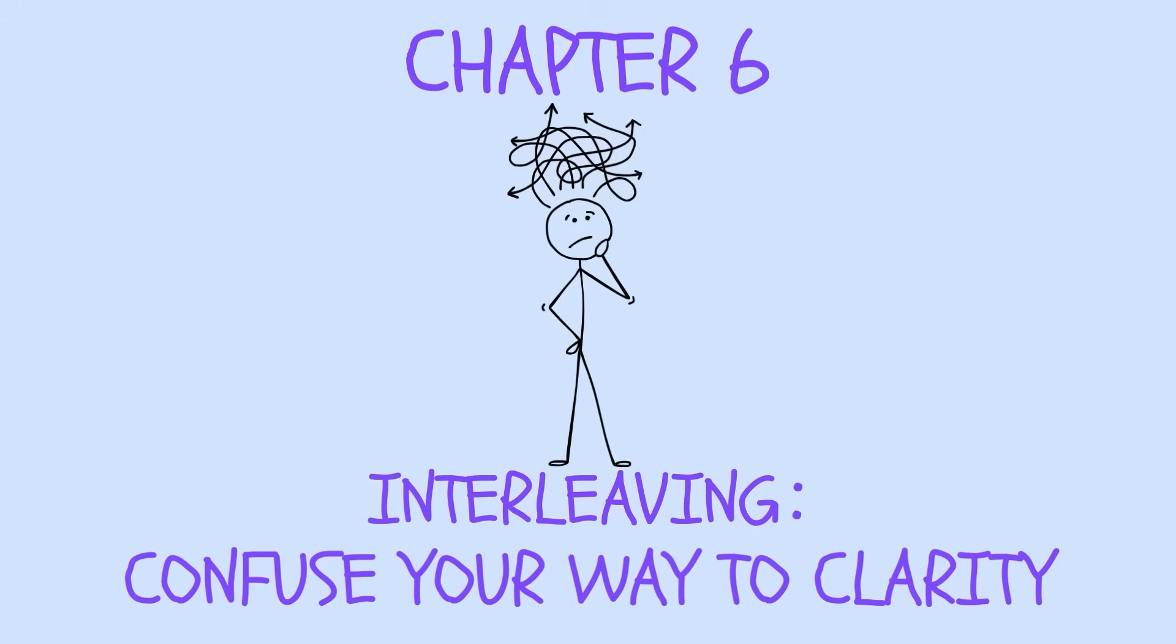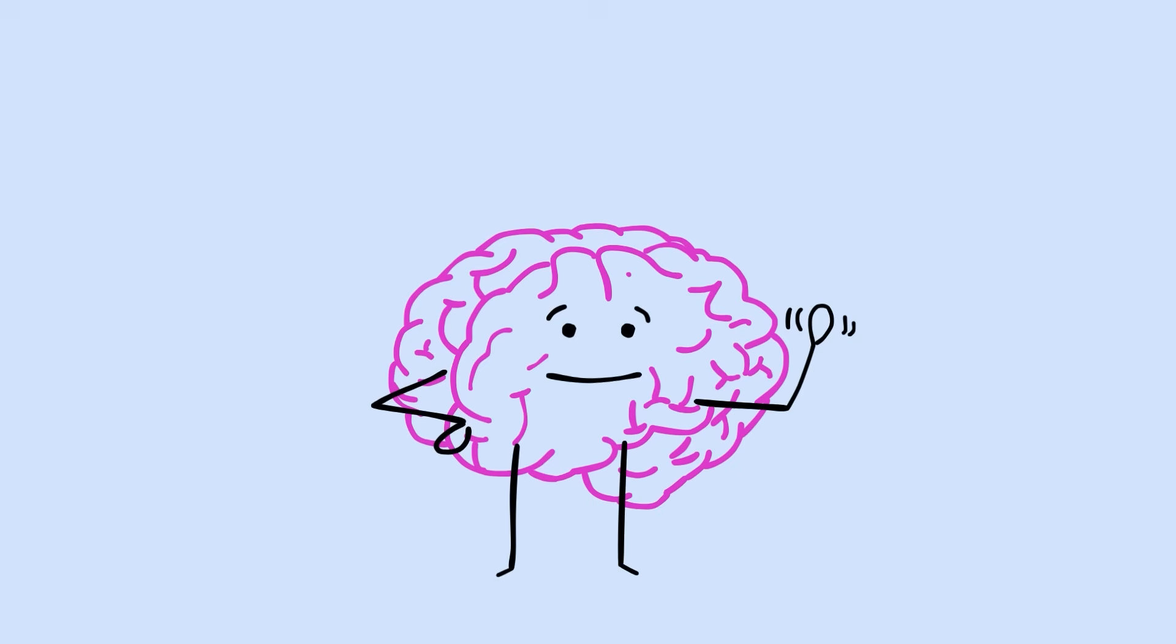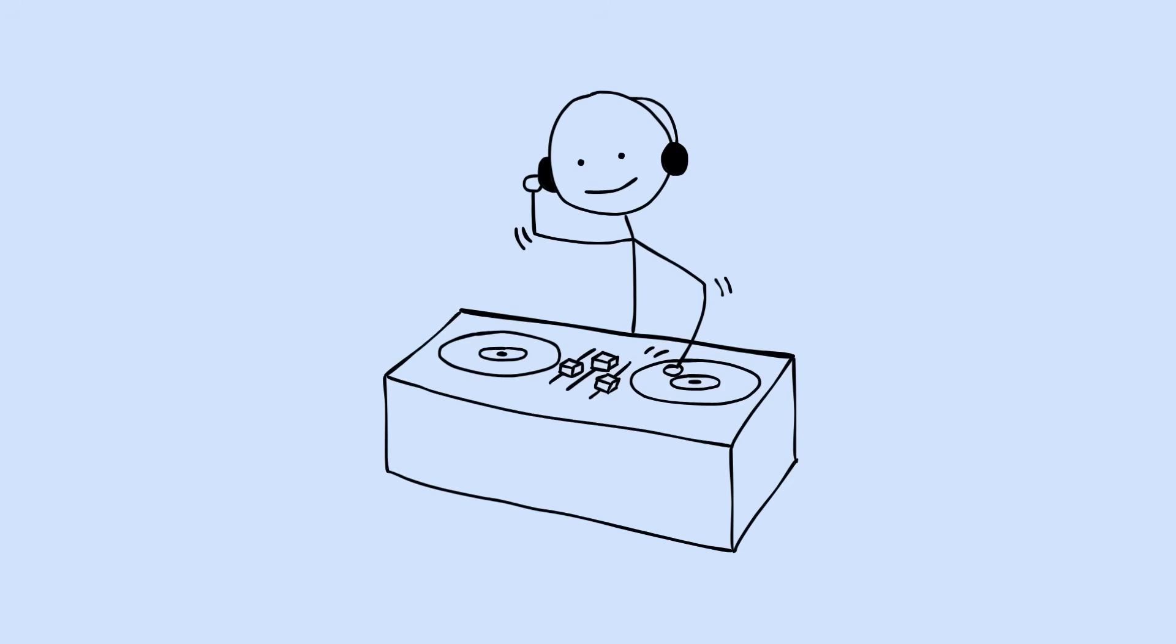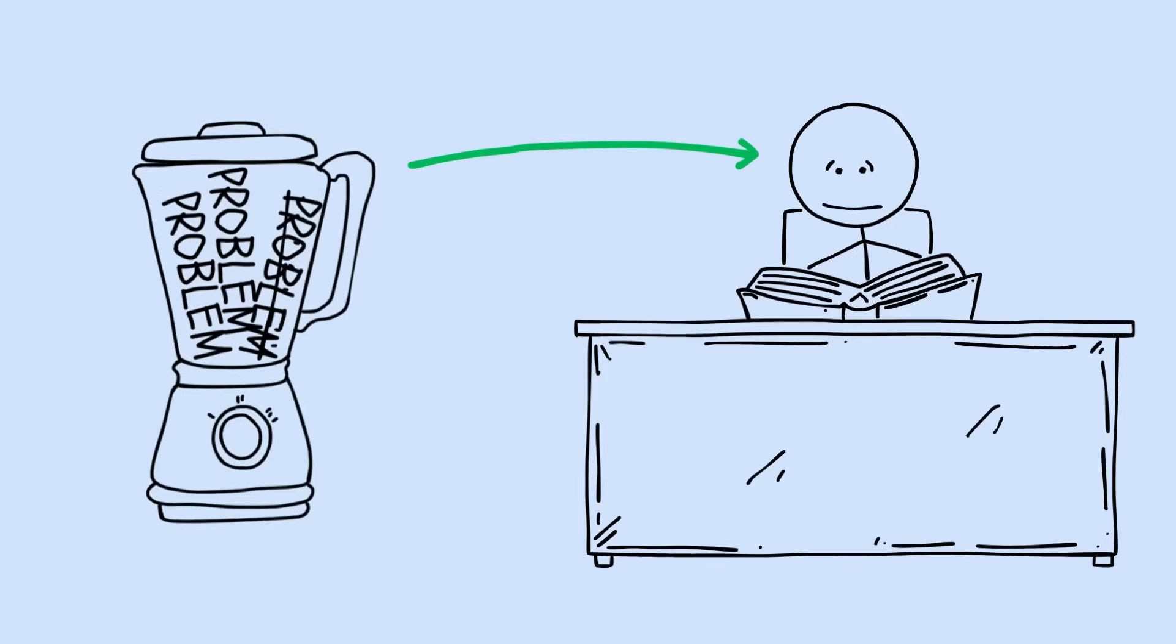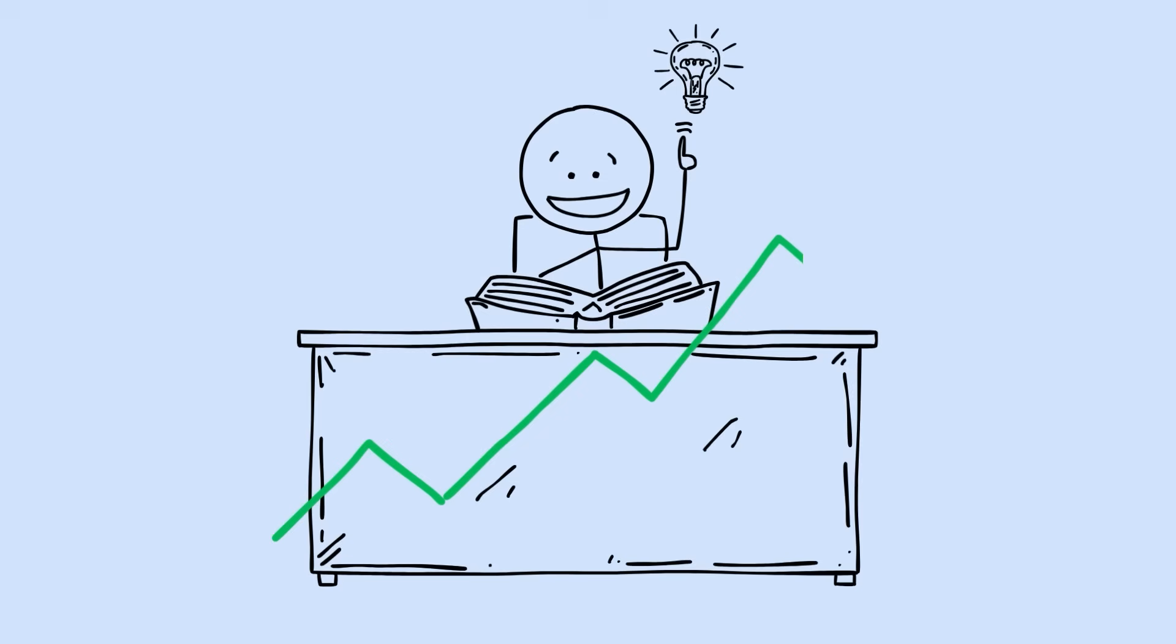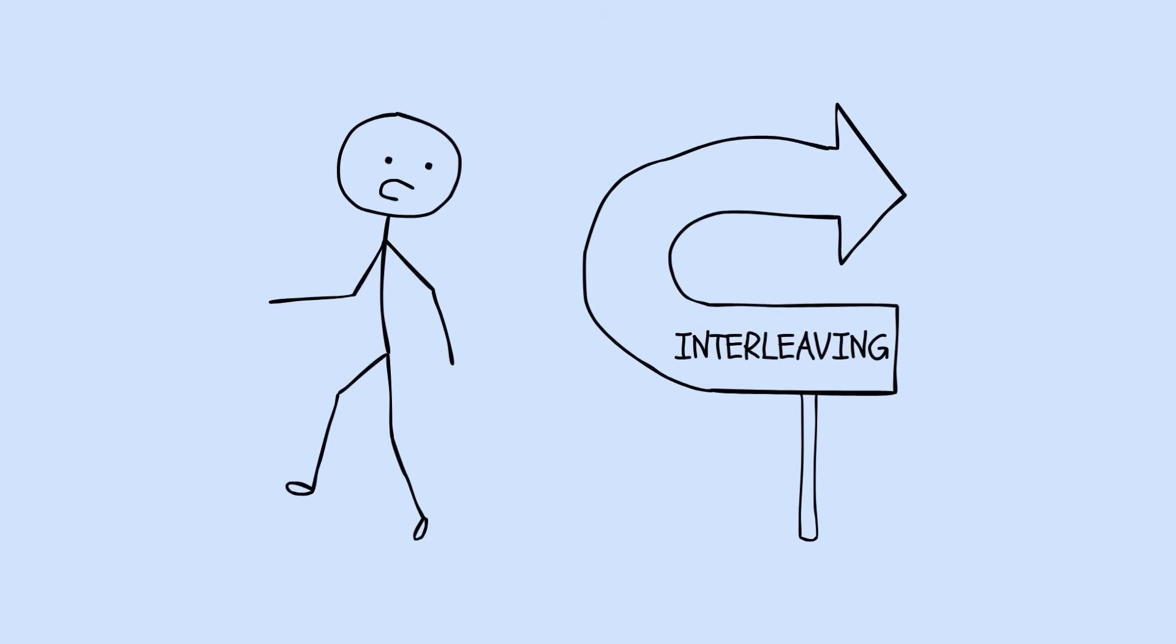Chapter 6. Interleaving. Confuse your way to clarity. Your brain is like a DJ. It works better when mixing tracks than playing the same song on repeat. This might sound backwards, but mixing different types of problems in a single study session improves performance on all of them. It's called interleaving, and it's the opposite of what most people do.